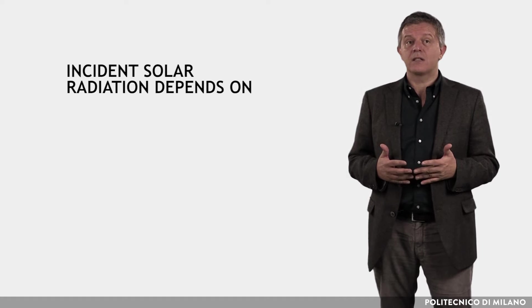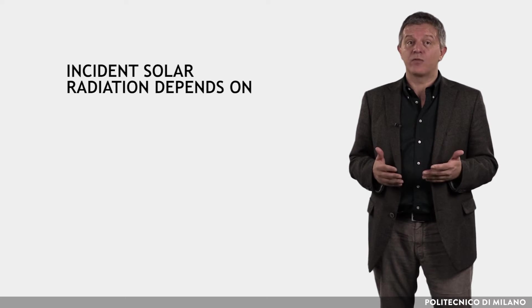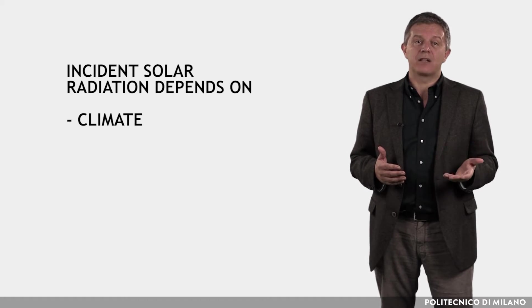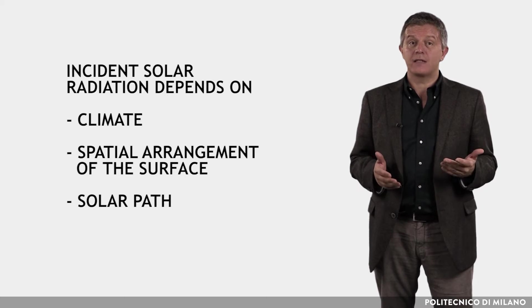Solar radiation incident on a surface at a given time of the year depends on the climate, the spatial arrangement of the surface, and the solar path.